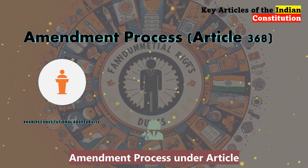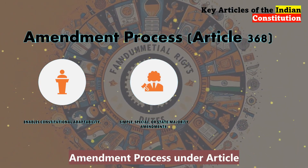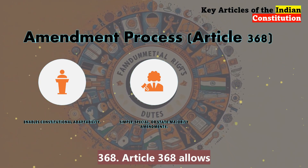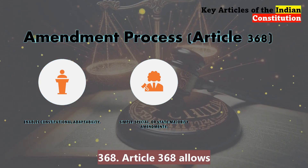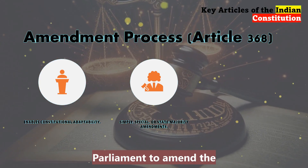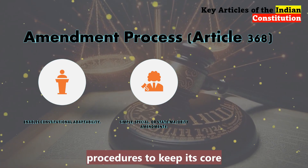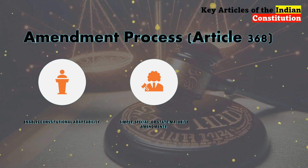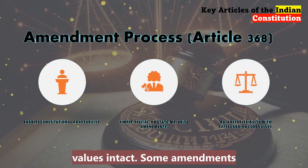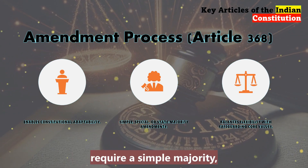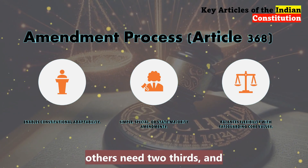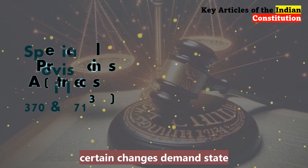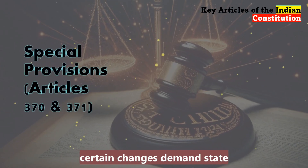Next is the amendment process under Article 368. Article 368 allows Parliament to amend the Constitution, with specific procedures to keep its core values intact. Some amendments require a simple majority, others need a two-thirds majority, and certain changes demand state approval. This allows the Constitution to adapt over time without losing its essence.